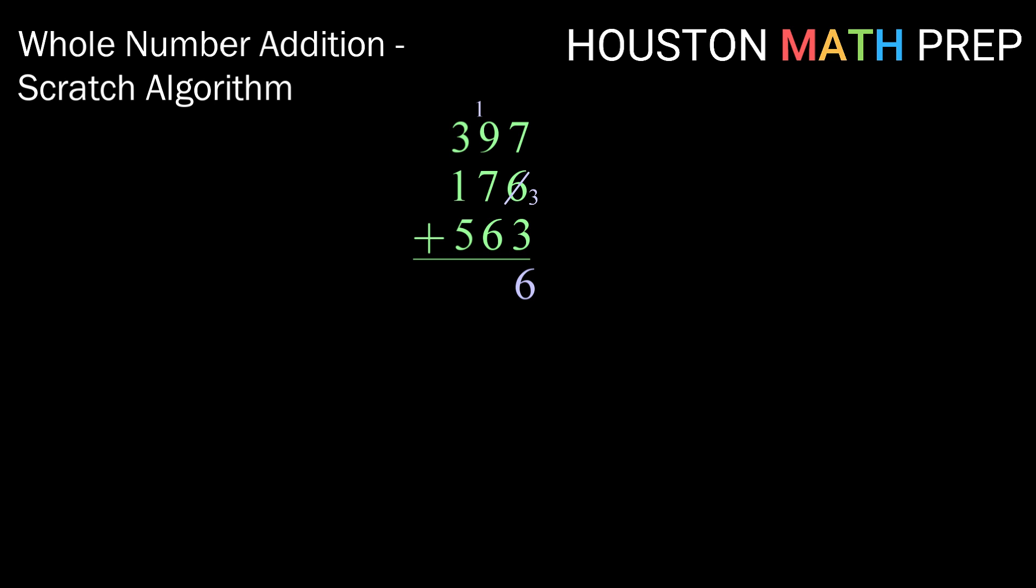Alright, column number 2. 1 plus 9 gives me 10, so I'm going to go ahead and make a scratch and write down the 0. 0 plus 7 is 7. 7 plus 6 is 13, so I'm going to go ahead and make a scratch, write down my 3. Now counting in that column, I have 1, 2 scratches, so I'm going to carry a 2 into my 100's column.